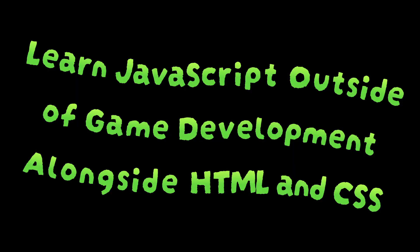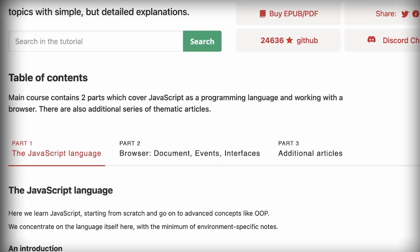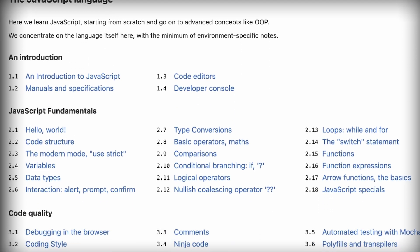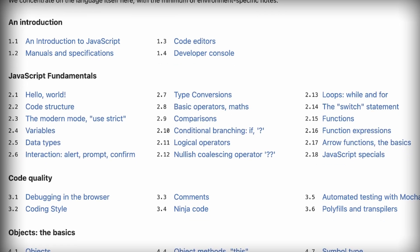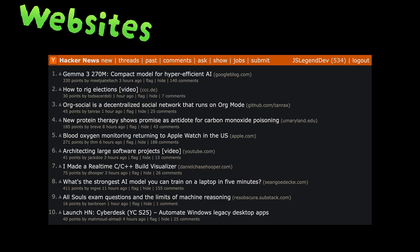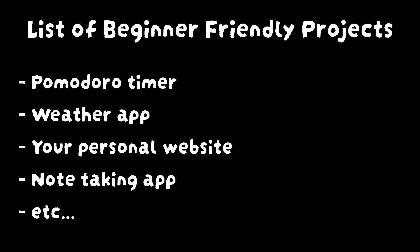Tip number one is to learn JavaScript outside of game development alongside HTML and CSS. I really recommend learning to program before learning game dev. For JavaScript that means learning the fundamentals of the language and how it integrates with HTML and CSS, considering that JavaScript is primarily used on the web to make websites and web apps. Your first few projects should be web related and not game related.